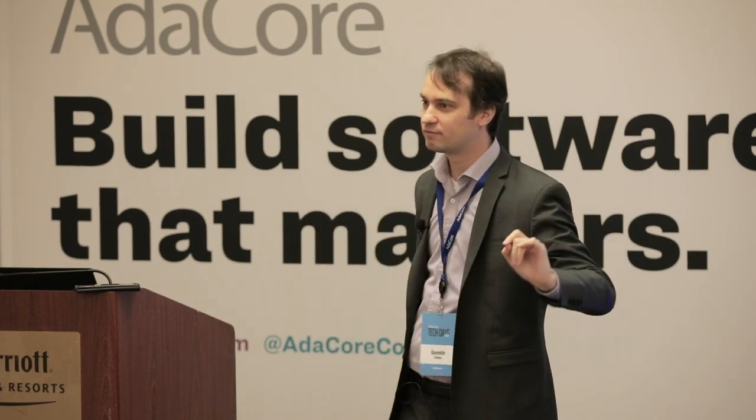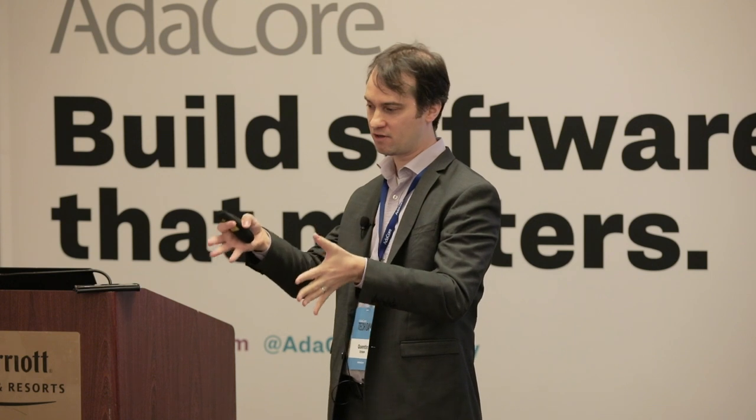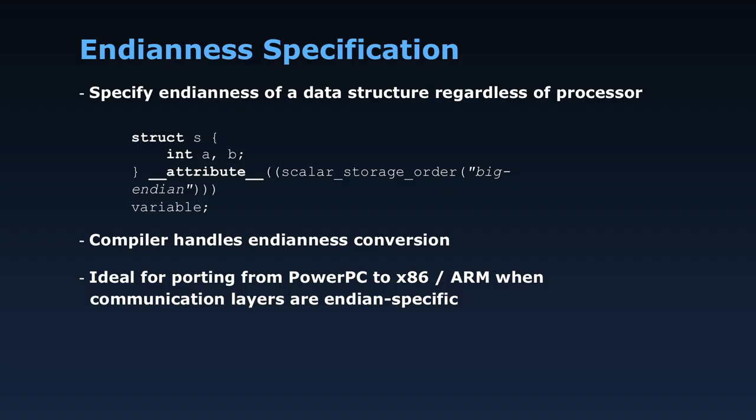We made a lot of noise about Ada supporting mixed endian specification — targeting a big-endian system but having records with little-endian layout or vice versa. We implemented that in the back end of the compiler, so we made it available to C as well. With our technology, you can specify the endianness of C structures exactly the same way as with Ada.